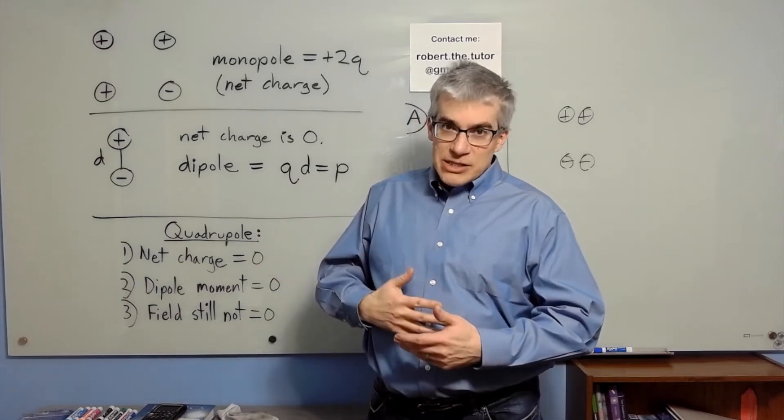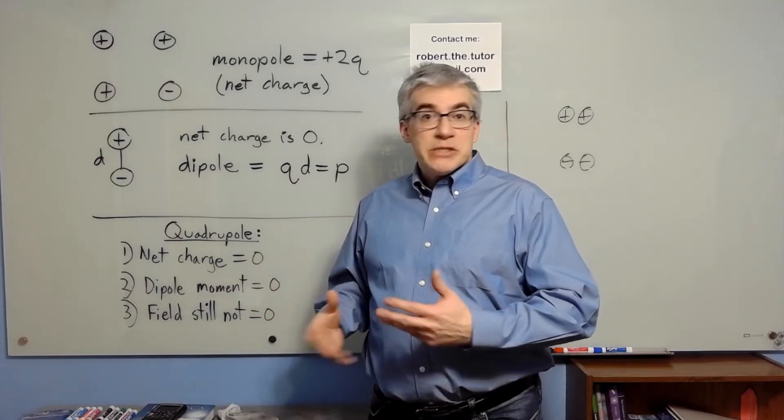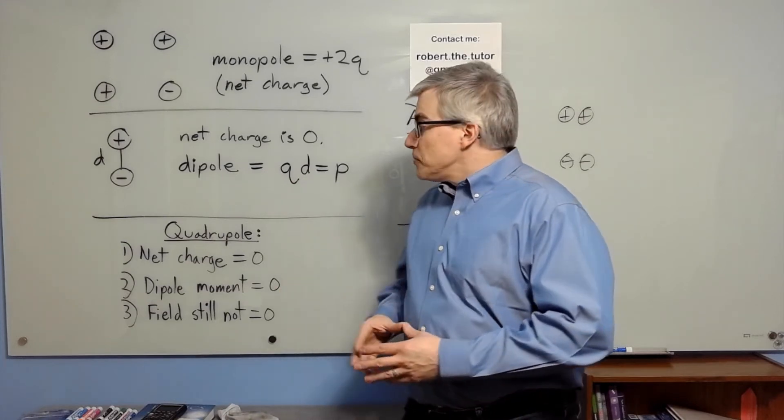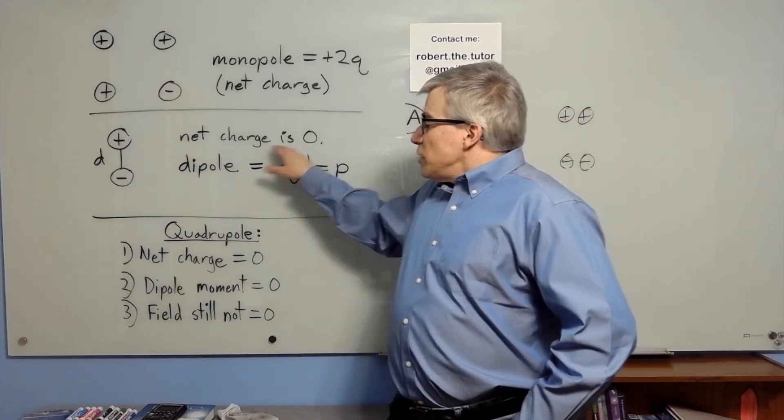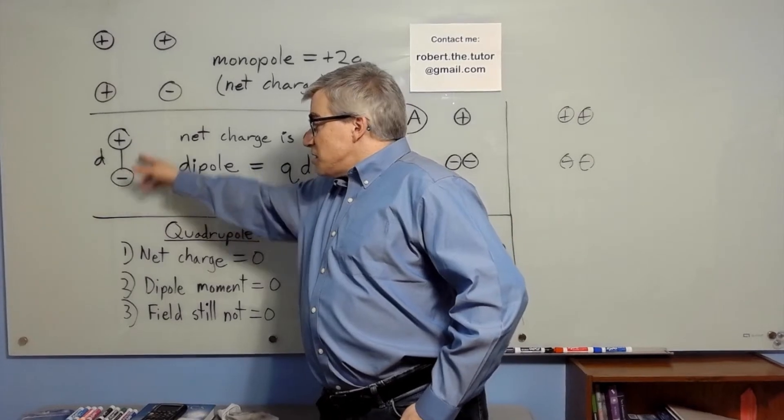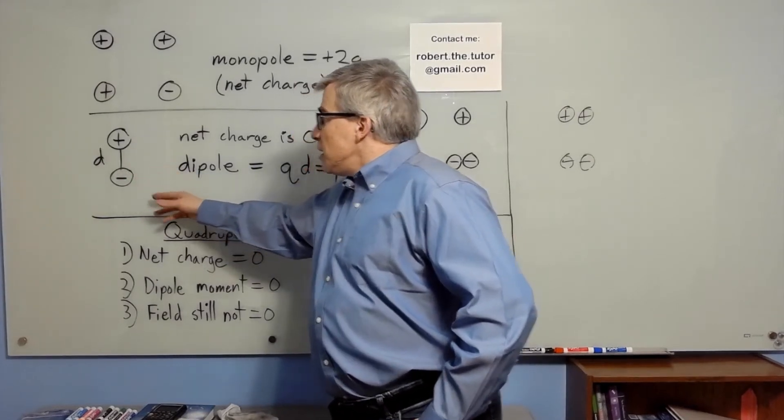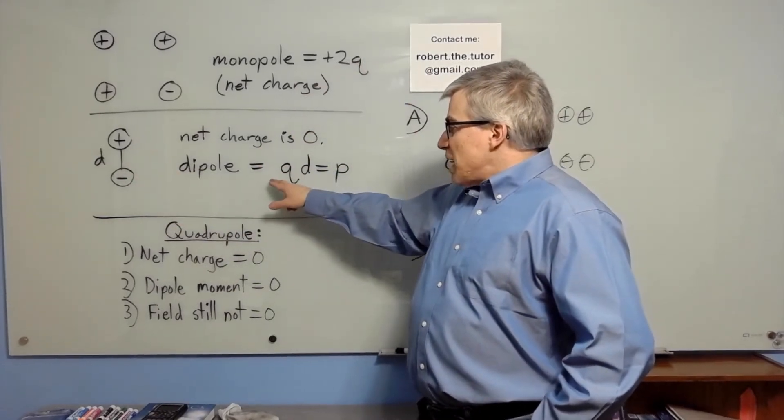We study this in chemistry because a lot of molecules have electric dipole moments. So if you have a plus and a minus on a stick—basically two charges of the same magnitude separated by distance d—q times d is what we call the electric dipole moment.